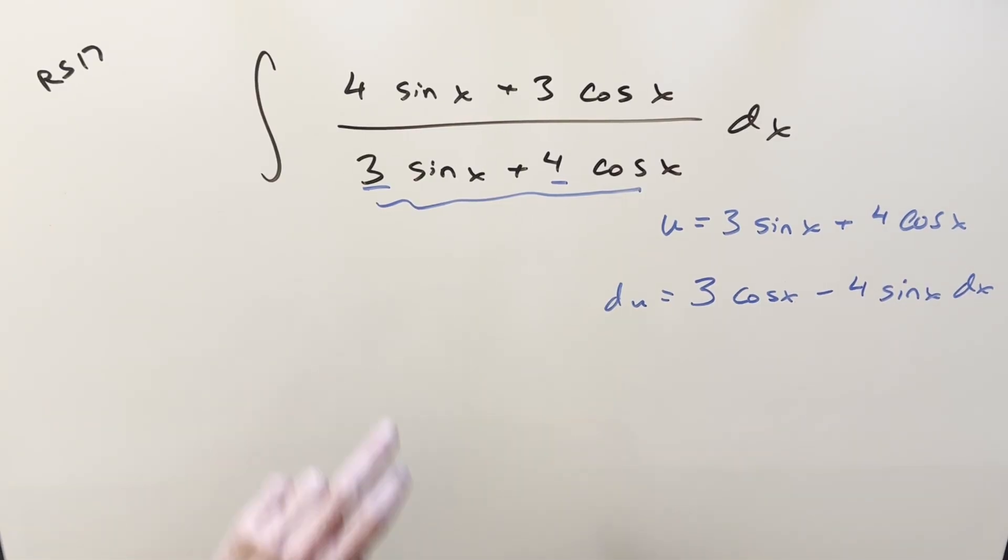What I was thinking at first is that maybe we could just match this to our numerator. So we have the 3 cosine x, we have 4 sine x, but we've got the wrong sign. This is minus here.